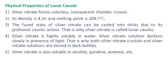Silver nitrate forms colorless, transparent rhombic crystals. Its density is 4.35 and melting point is 209.7 degrees Celsius. The fused state of silver nitrate can be cast into sticks due to its profound caustic action, which is why silver nitrate is called lunar caustic.